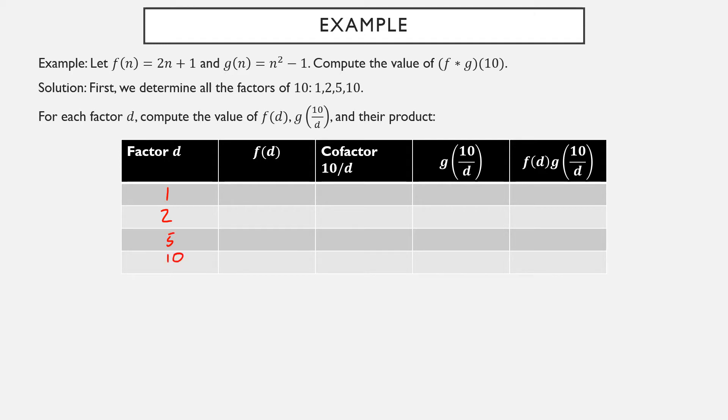f(n) is 2n + 1. So for those factors, we get 2 times 1 plus 1 is 3, 2 times 2 plus 1 is 5, 2 times 5 plus 1 is 11, and 2 times 10 plus 1 is 21. Now the cofactor is going to be 10 over the divisor. So 10 over 1 is 10, 10 over 2 is 5, 10 over 5 is 2, and 10 over 10 is 1. I would simply point out that you're just taking pairs of numbers that multiply to 10: 1 and 10, 2 and 5, 5 and 2, 10 and 1.